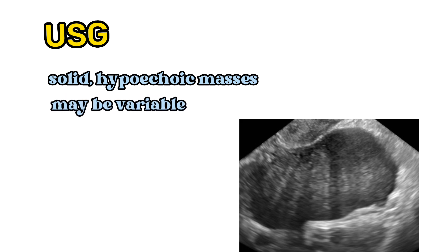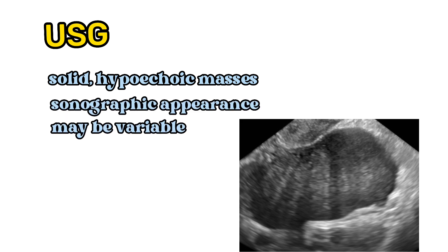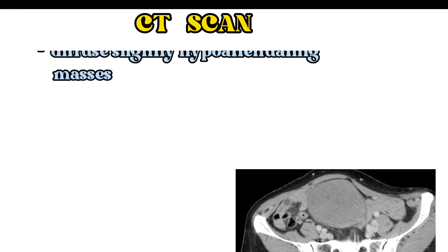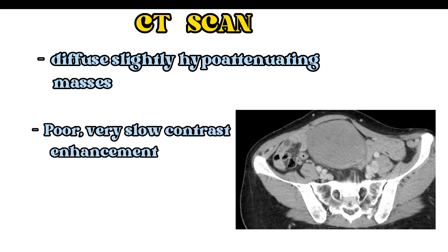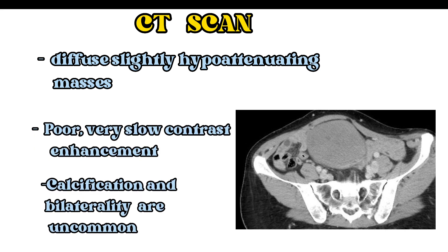On computed tomography scan, fibromas usually manifest as diffuse, slightly hypoattenuating masses with poor, very slow contrast enhancement. Calcification and bilaterality are both uncommon.